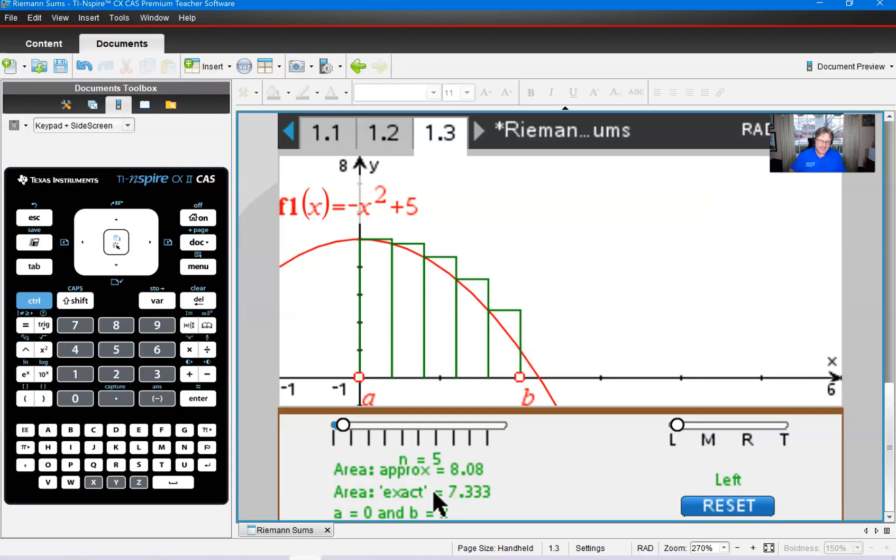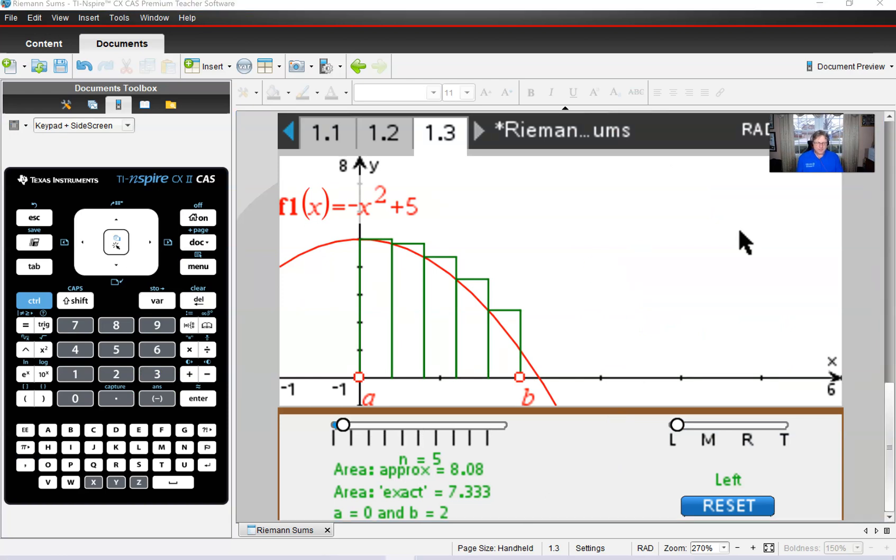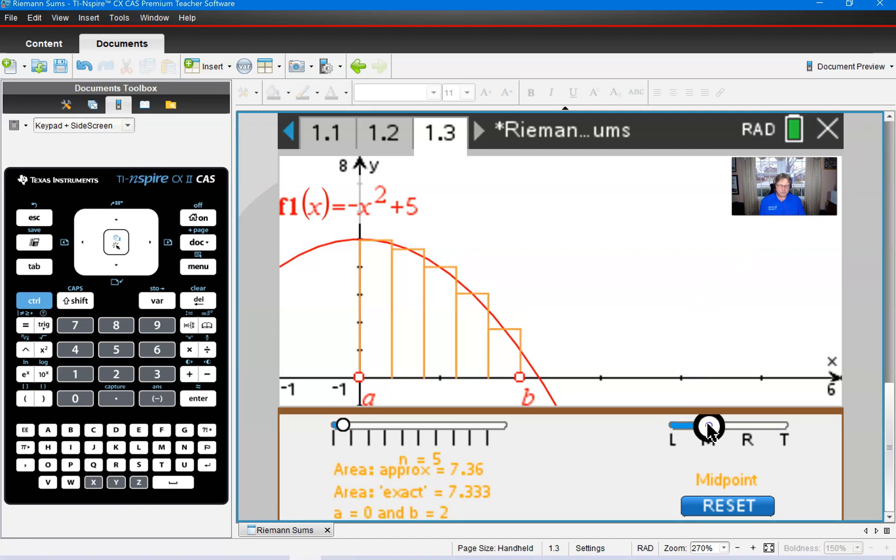So to finalize things, I just want to return back to this program and just kind of mention some of the other cool things that you can do. Yes, you probably figured out when you slide this to M, you see the midpoint setup. When you slide it over to T, you see the trapezoid setup. But notice, no matter what kind of an approximation you use, this exact area remains at 7.333. And that's going to become the large focus of this unit as we move much deeper into it and understand how to find these exact areas.